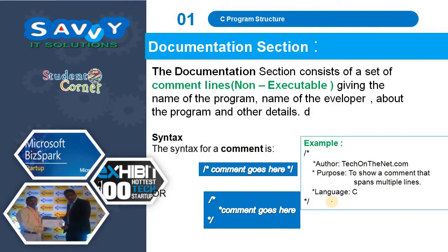The documentation section consists of a set of comment lines, also called non-executable statements, giving the name of the program, name of the developer, about the program, and other details. The syntax for representing comments is slash-asterisk and asterisk-slash.